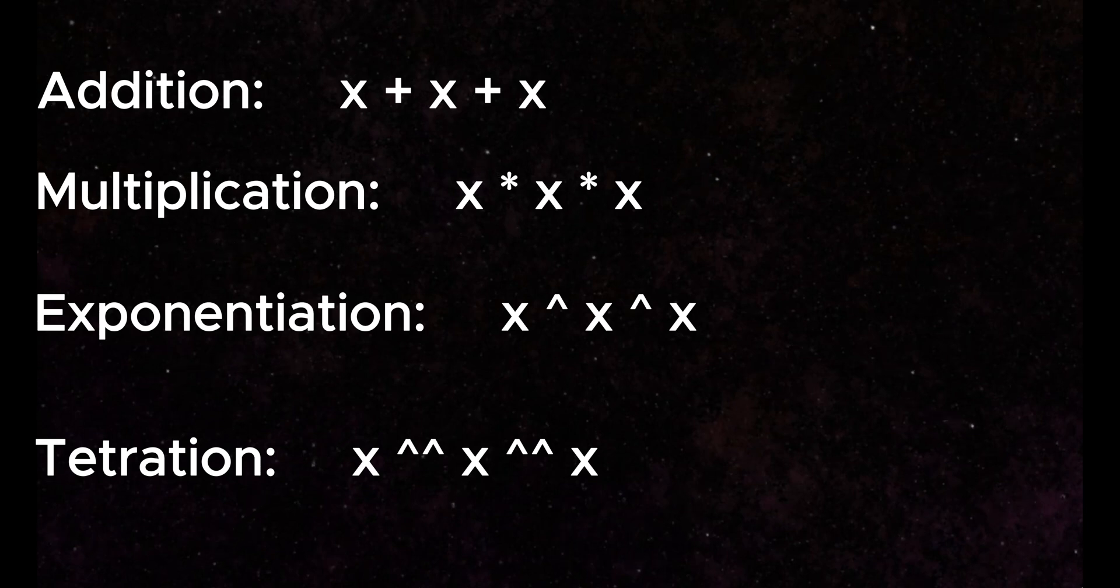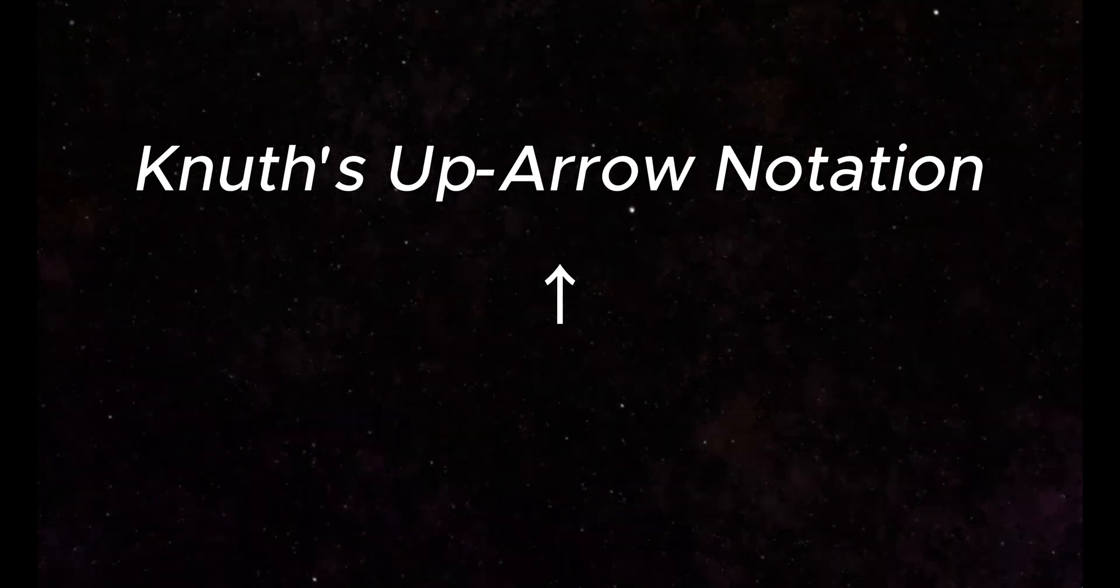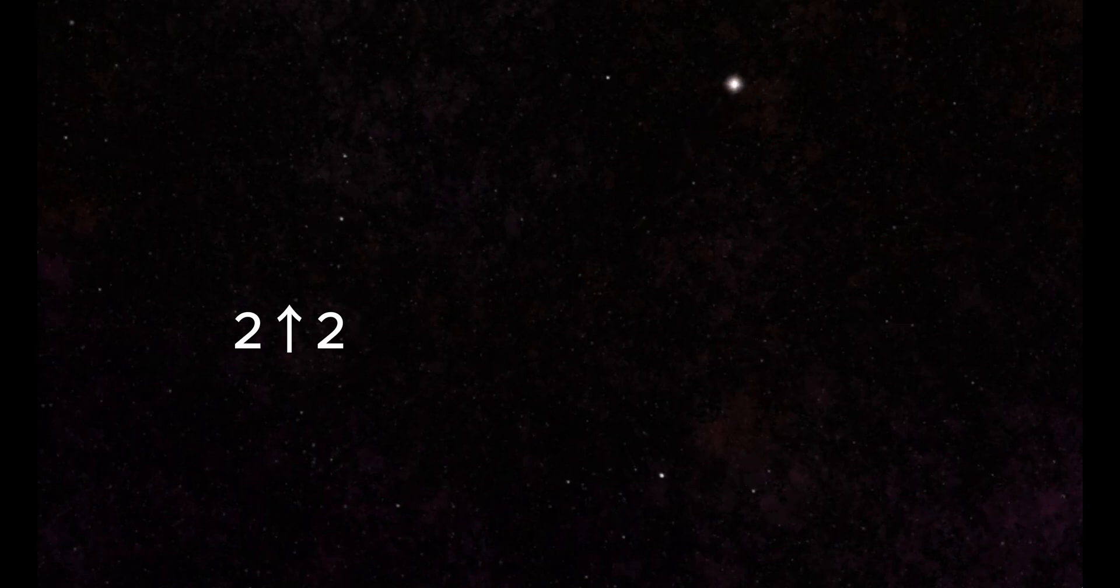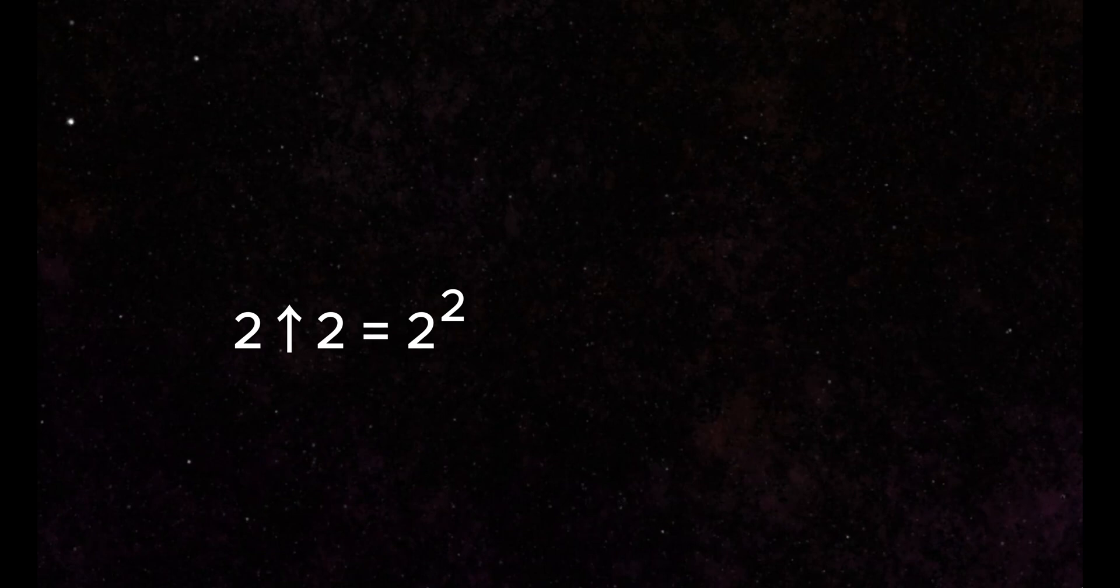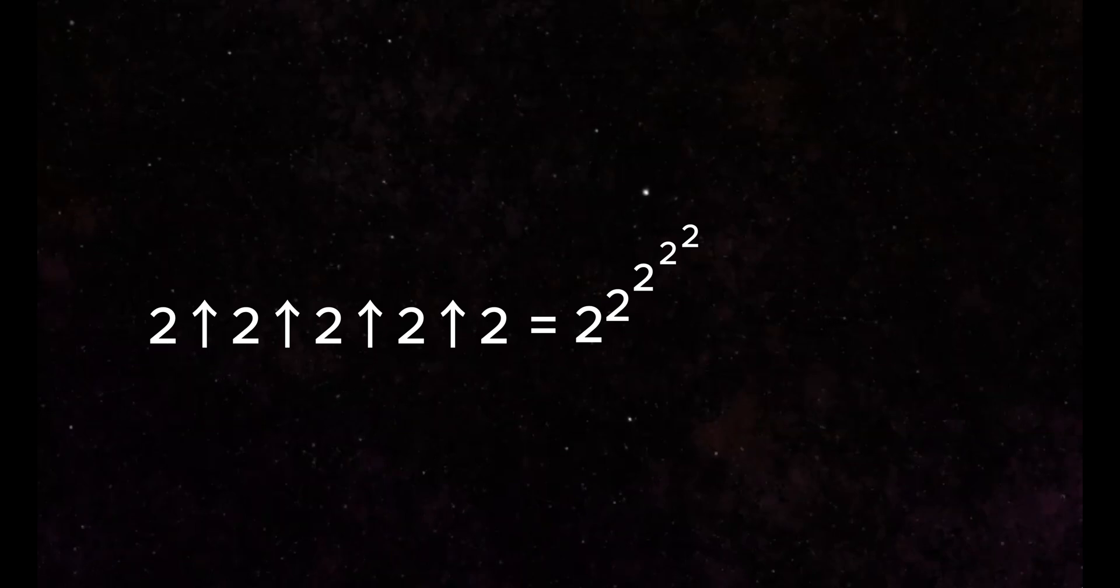A useful way to understand and use tetration is with Knuth's up arrow notation, which works as follows. A single arrow works the same way as an exponent. The first number is raised to the second number. Likewise, a group of single arrows gives us a power tower, a stack of digits that represents the first number raised to the next, which is raised to the next, etc.